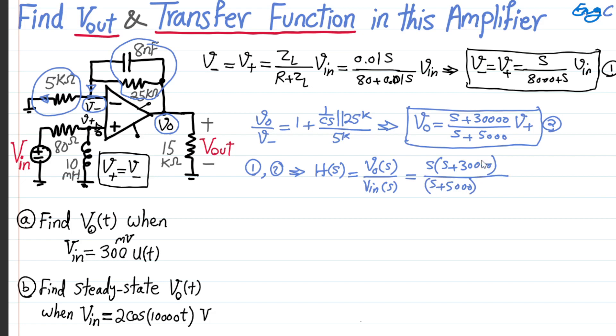Which is Vout divided by Vin, of course in S domain, is equal to just simply S times S plus 30,000 divided by S plus 5,000, which is the denominator, one part of the denominator coming from here, and S plus 8,000, which is the second portion of the denominator coming from 1. S plus 8,000. So this is the transfer function that we were looking for to find for this linear circuit.